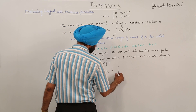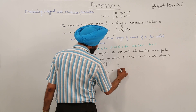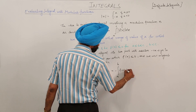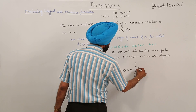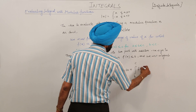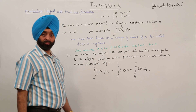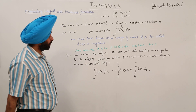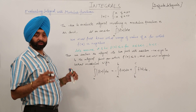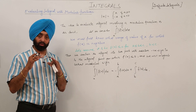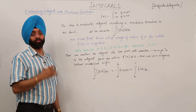It will be written as: negative of the integral from a to b of f(x) dx, plus the integral from b to c of f(x) dx. This is the main theoretical result, and now we will go through a nice example.